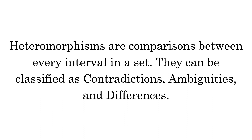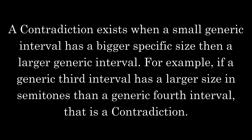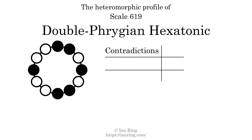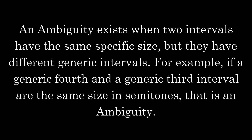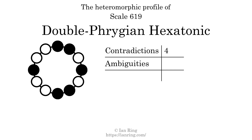Heteromorphisms are comparisons between every interval in a set. They can be classified as contradictions, ambiguities, and differences. A contradiction exists when a small generic interval has a bigger specific size than a larger generic interval — for example, if a generic third interval has a larger size in semitones than a generic fourth interval. The number of contradictions in this scale is four. An ambiguity exists when two intervals have the same specific size but different generic intervals. The number of ambiguities in this scale is 13.